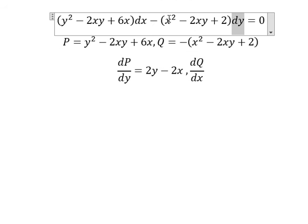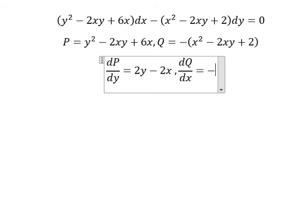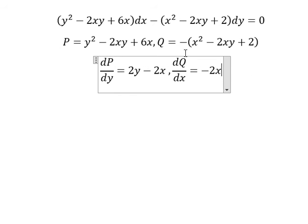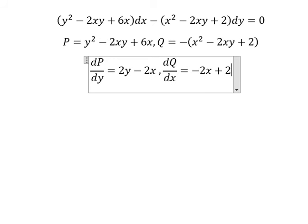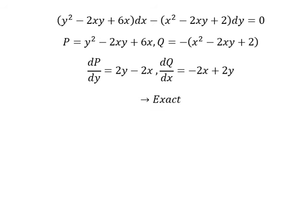For the y, we need to find the first derivative of this one with respect to x — we have negative with x. So we have negative two x; negative with negative gives positive, so we have two y. And we see that this one equals to this one, so we can use the exact method.